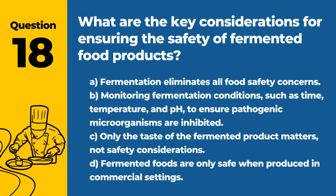Question 18. What are the key considerations for ensuring the safety of fermented food products? a. Fermentation eliminates all food safety concerns. b. Monitoring fermentation conditions such as time, temperature, and pH to ensure pathogenic microorganisms are inhibited. c. Only the taste of the fermented product matters, not safety considerations. d. Fermented foods are only safe when produced in commercial settings. Answer: b. Monitoring fermentation conditions such as time, temperature, and pH to ensure pathogenic microorganisms are inhibited. Properly controlled fermentation is critical for the safety of these products.